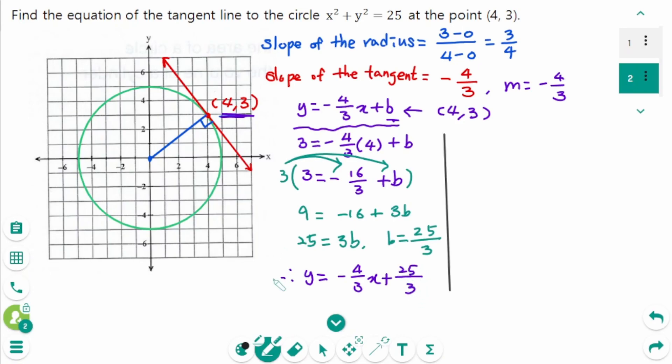Now we have to change this slope-intercept form into standard form. y equals minus 4 over 3x plus 25 over 3, multiply by 3 on each side. Then 3y equals minus 4x plus 25. Move minus 4x to the left. Final answer is 4x plus 3y equals 25.